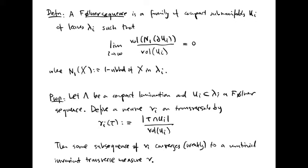We claim that if the U_i are a Følner sequence, some sub-sequence of the nu_i converges weakly to a non-trivial invariant transverse measure nu.